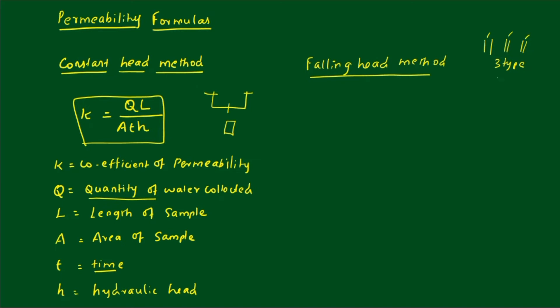We connect the drainage through the permeometer, and from that we can calculate the coefficient of permeability. The formula is: k is equal to 2.303 into a into L divided by capital A into T, log₁₀ of H1 divided by H2.